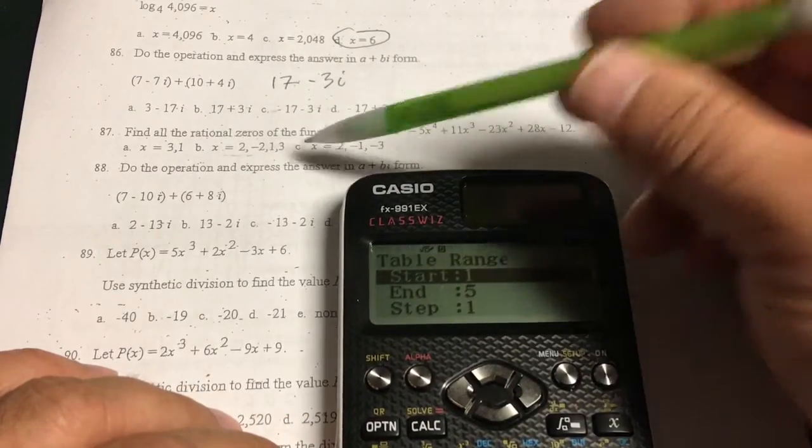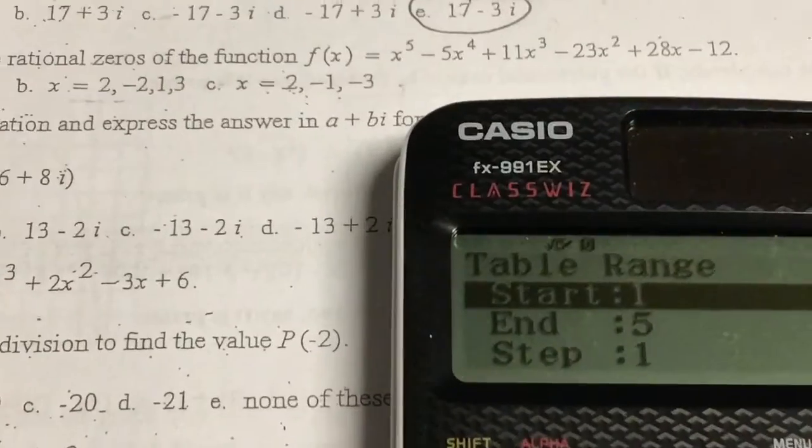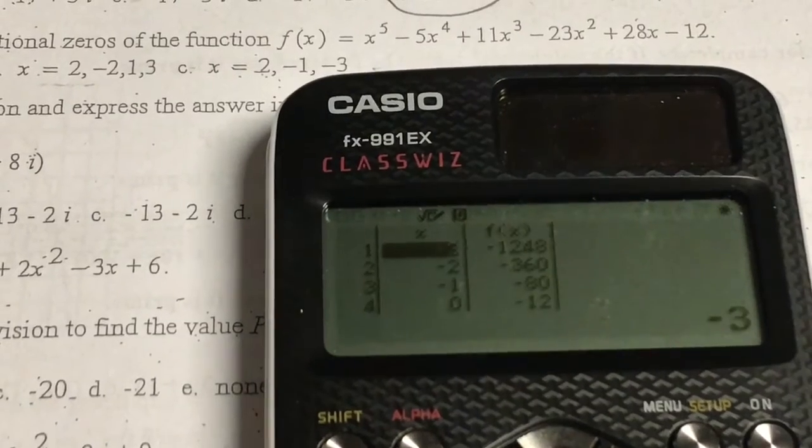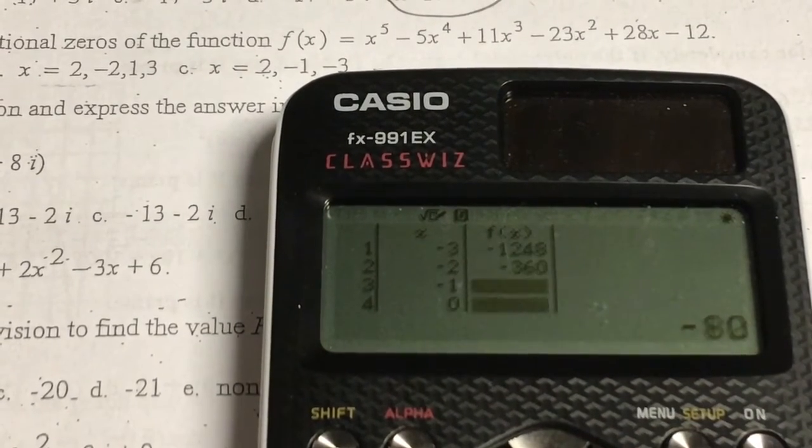I'm going to start at the lowest one, which is negative 3, and then the highest one which is 3. So I'm going to start at negative 3. I'm going to end at 3. And we're going to step by 1. Now I'm looking for zeros over on the right. And then scroll down.